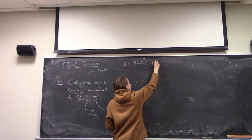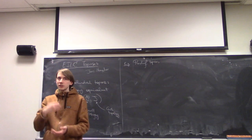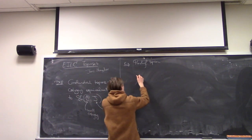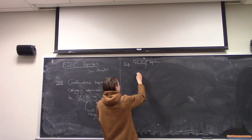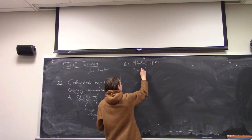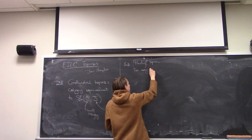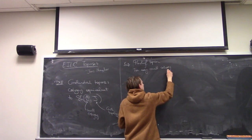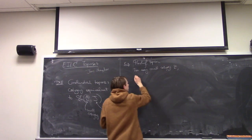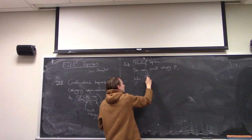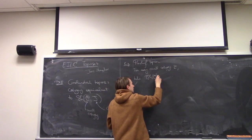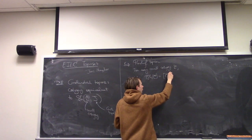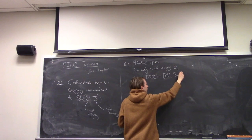The first example you can look at is pre-sheaf toposes, and this is already a really large family of toposes. As soon as you know about categories, you can look at the pre-sheaf topos for C, which is the same thing as a category of functors from the opposite category to the category of sets.